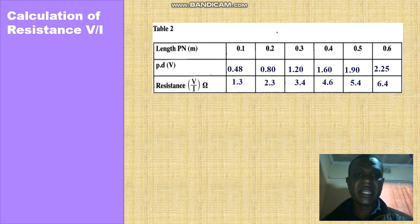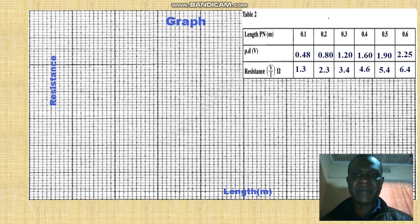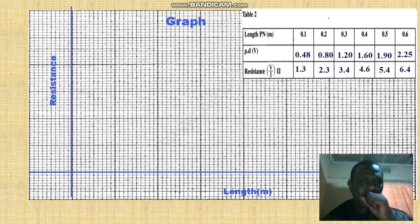Now we go ahead and plot our graph. Our graph paper is there. We draw our axis. So we are going to use the scale. Our scale is 0.01 on the x-axis and 0.1 on the y-axis.